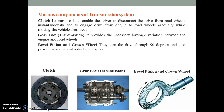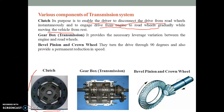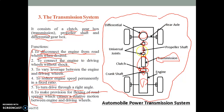Next, let's discuss the clutch. The general purpose of the clutch is to enable the driver to disconnect the drive from the road wheel instantaneously, and to engage drive from the engine to the road wheel gradually while moving the vehicle. It is a mechanism by means of which the engine is connected or disconnected from the rest of the transmission system, as discussed in the previous diagram.